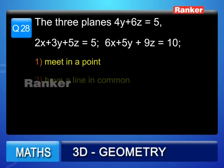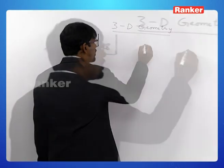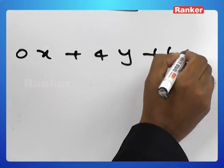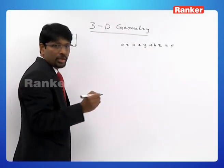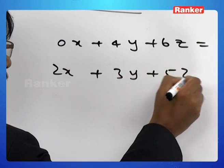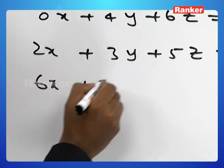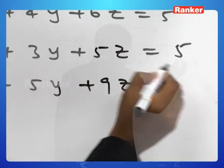Let us move on to question number 28. The three planes: 4y + 6z = 5, 2x + 3y + 5z = 5, and 6x + 5y + 9z = 10. Do they: (1) meet in a point, (2) have a common line, (3) form a triangular prism, or (4) meet at infinitely many points?